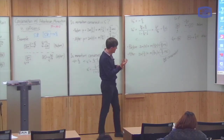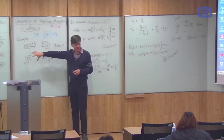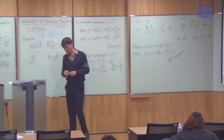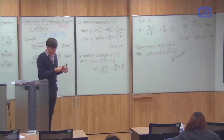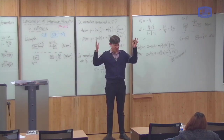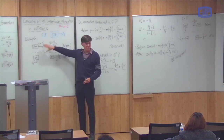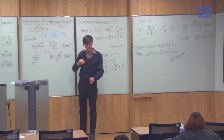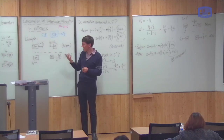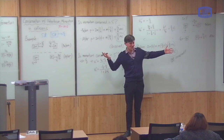This means conservation of Newtonian momentum is a bad law in special relativity. If two observers look at the same collision, one thinks momentum is conserved and the other thinks it is not. But the principle of relativity says the results of an experiment must be the same whether the experiment is stationary or moving at constant velocity. You can't have one observer say yes and the other say no — both must agree.